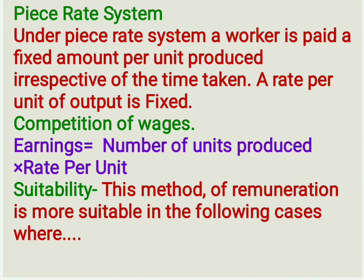Piece Rate System: Under Piece Rate System, a worker is paid a fixed amount per unit produced irrespective of the time taken. Rate per unit of output is fixed. Earnings of a worker are calculated as follows: Earnings = number of units produced × rate per unit. Under this method, the rates are fixed by systematic work study, time and motion study, and job evaluation.